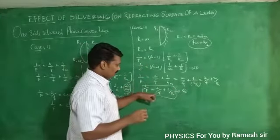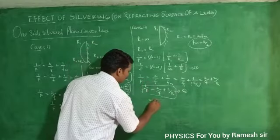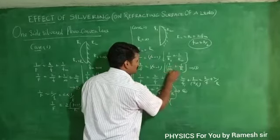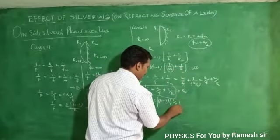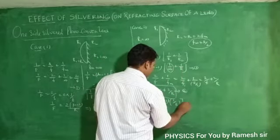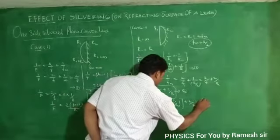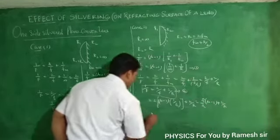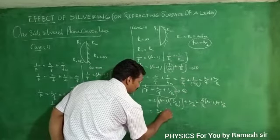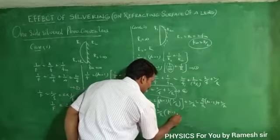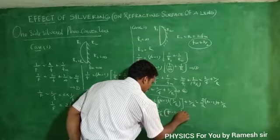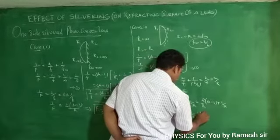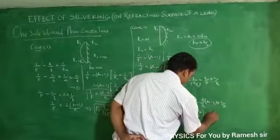Now we substitute the value of 1/f. So 2 into 1/f equals 2(μ - 1)/r. Since 1/r1 = 0 for the plane surface, we have (μ - 1) into 1/r = (μ - 1)/r. Adding 2/r gives 2(μ - 1)/r + 2/r, which equals 2/r into [(μ - 1) + 1], giving us 2μ/r.